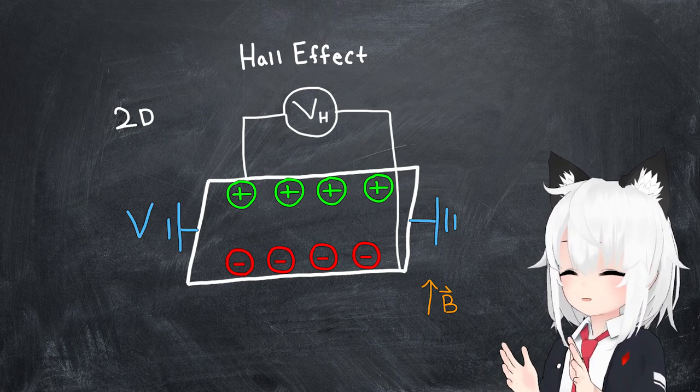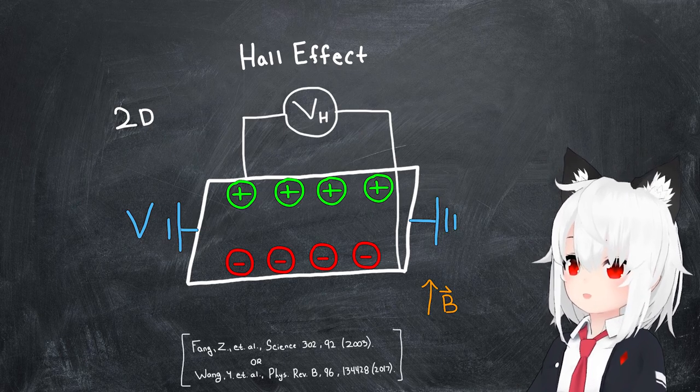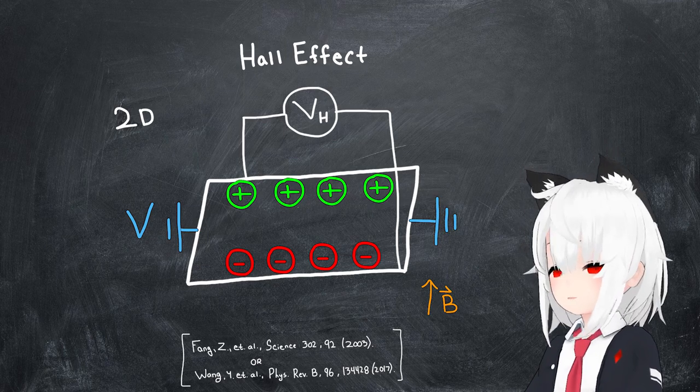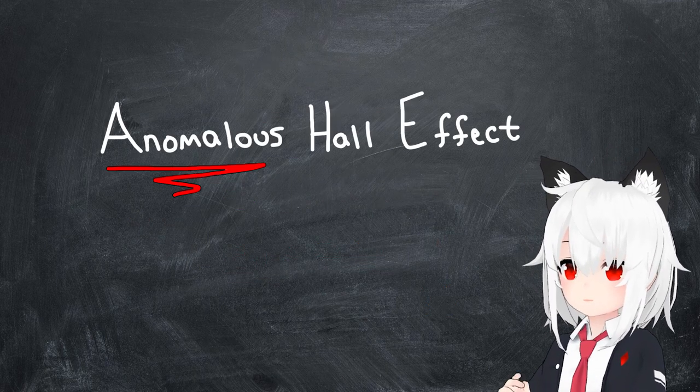Well, not always. In fact, in a few special materials, a non-zero Hall voltage has been measured even in the absence of a magnetic field. This is called the anomalous Hall effect.